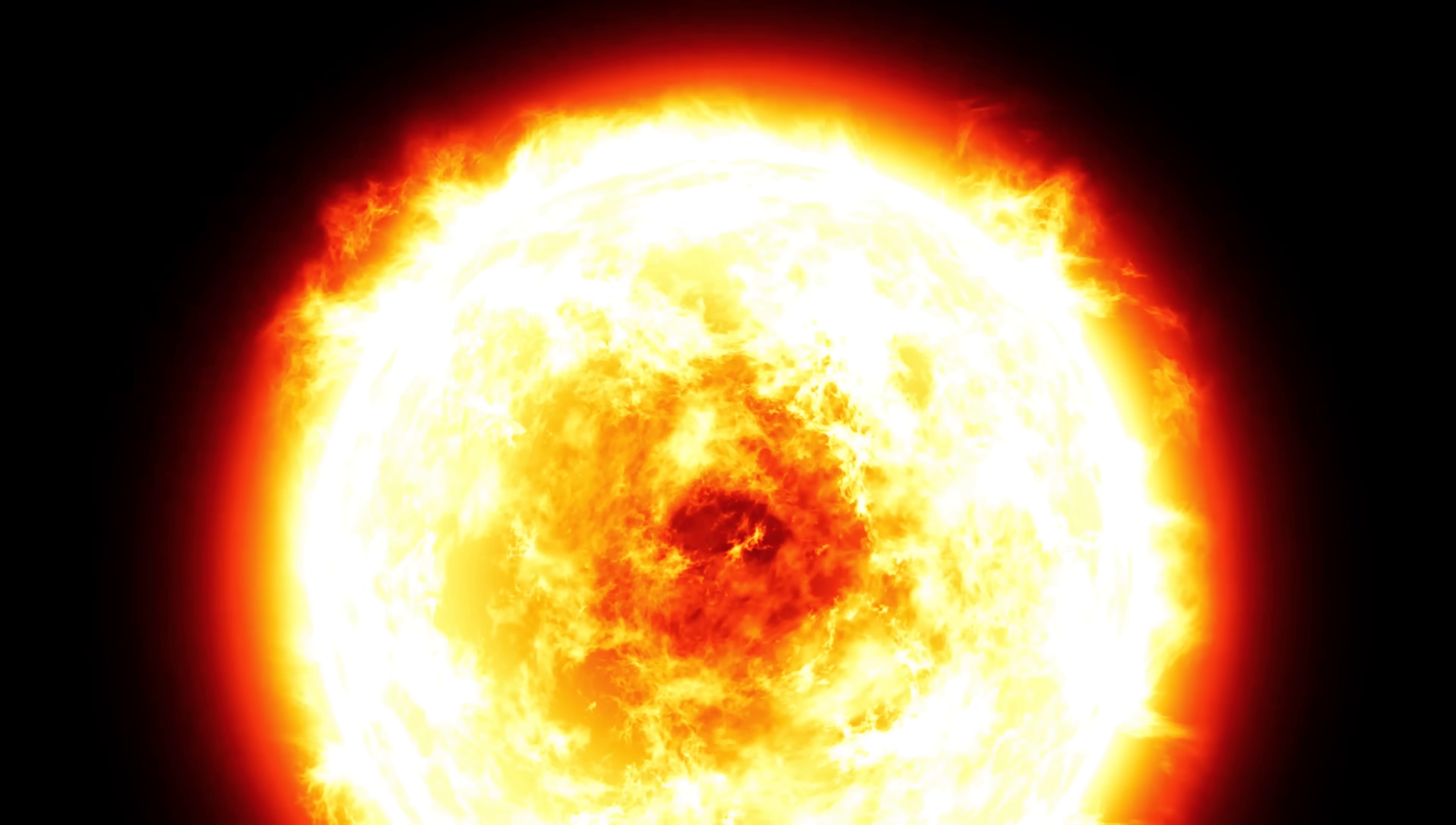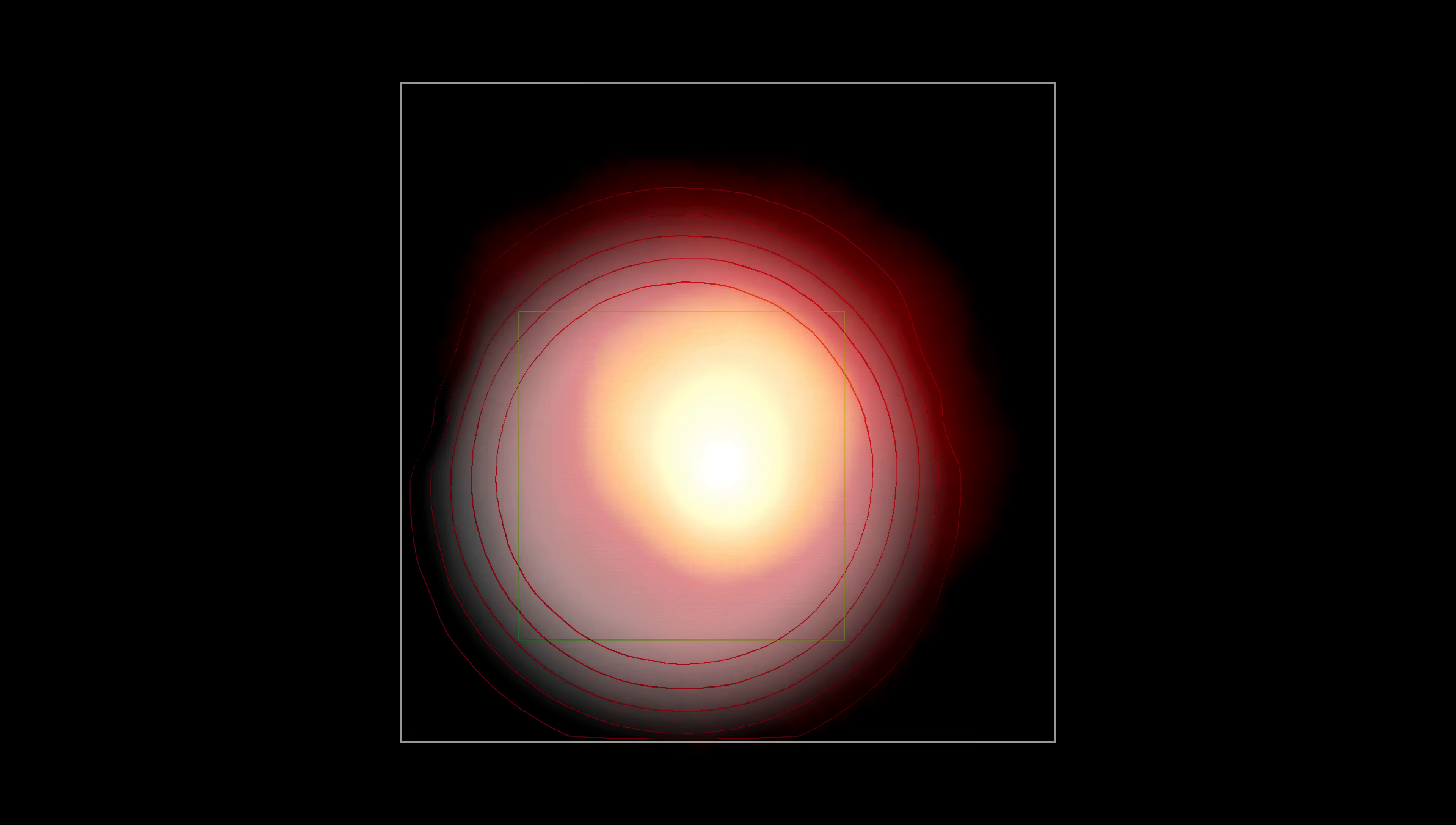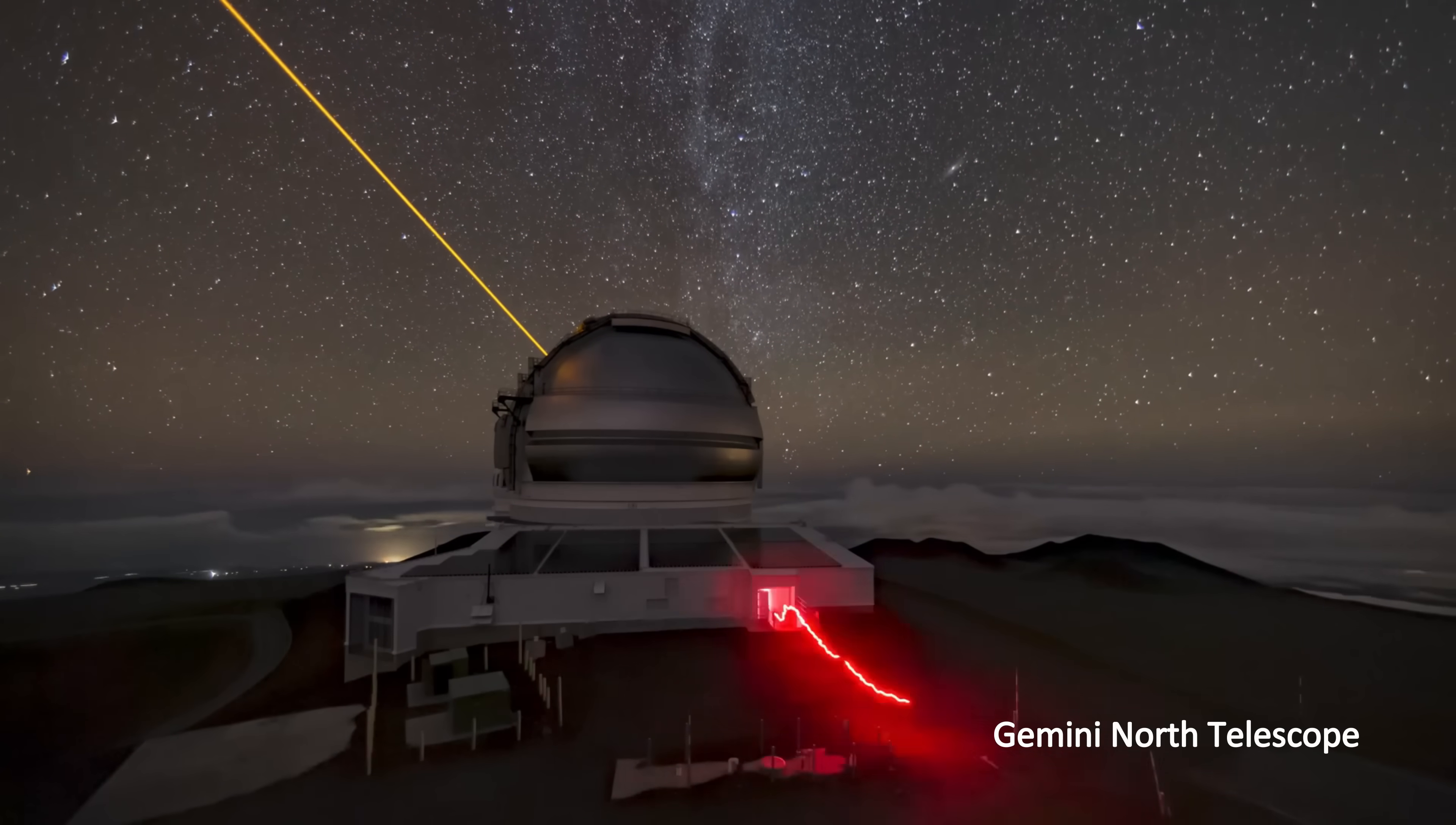This is where it gets tricky. Betelgeuse is so massive and bright that spotting a smaller, fainter object right next to it is not easy. That was when Steve Howell, a scientist at NASA Ames Research Center, and a team of astrophysicists decided to bring in a game-changer, AlloPeak, a speckle imager mounted on the Gemini North Telescope to help them finally crack the case.